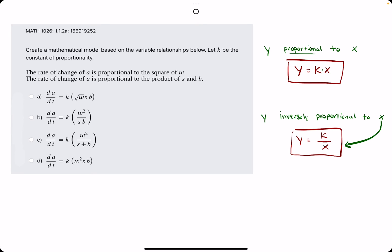So we are constructing the equation for the rate of change of A, represented by dA over dt. They tell us that the rate of change of A is proportional to the square of W.